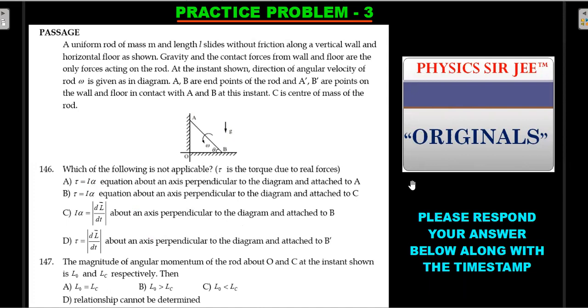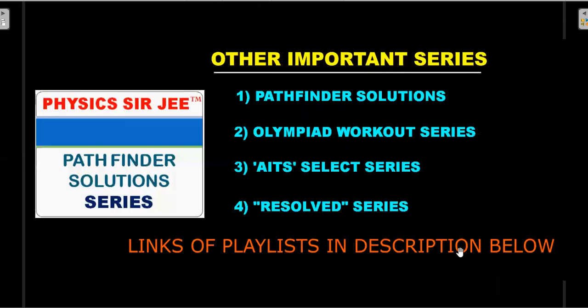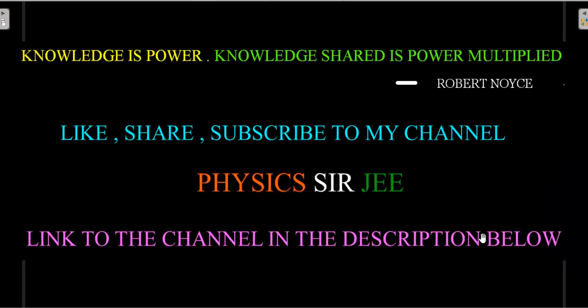Practice problem four is from Irodov, almost at JEE Mains level — problem 1.22 — similar to the ICR and train question. Respond with your answers and time stamps in the comments, and I'll reply. Apart from the Pathfinder Solutions series, there are many series on this channel — check the description if you're new. Keep leaving likes, share, and subscribe so your JEE preparation journey and your enjoyment of physics are both fulfilled. Thanks for staying this long — see you in the next video!